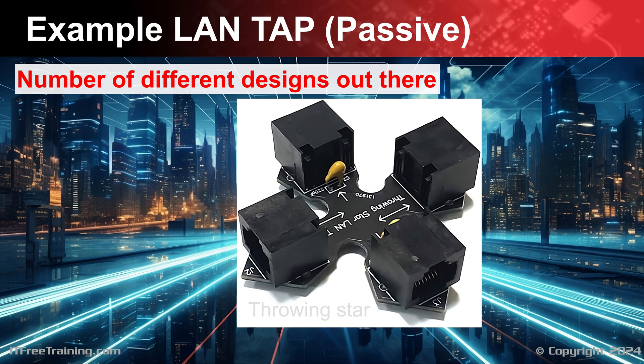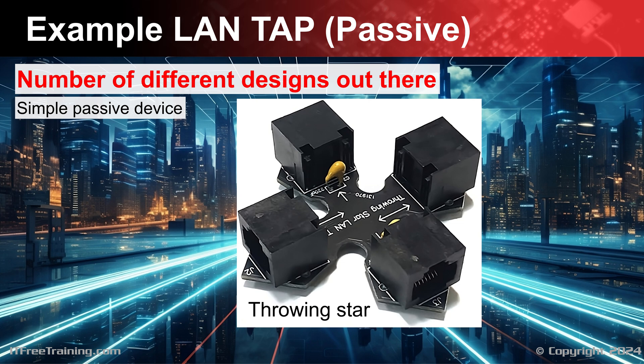One such design, aptly named the throwing star, is visually reminiscent of a throwing star, thus the name. It is important to note the limitations — as a simple passive device, it works as a traditional network hub by mirroring the incoming traffic across multiple ports. Consequently, this architecture restricts the network speed to 100 megabits per second. Modern networks generally run at a minimum speed of 1 gigabit per second, so if you do decide to purchase one of these, just be aware of the speed limitation.